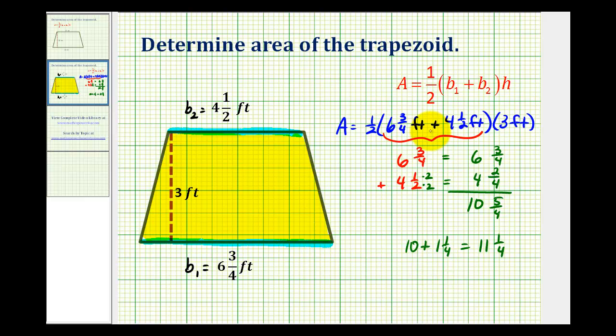But because we have a product that involves a mixed number, we will have to convert this to an improper fraction. So eleven and one-fourth is going to be equal to four times eleven, which is forty-four plus one. So forty-five-fourths. So this sum here is equal to forty-five-fourths.